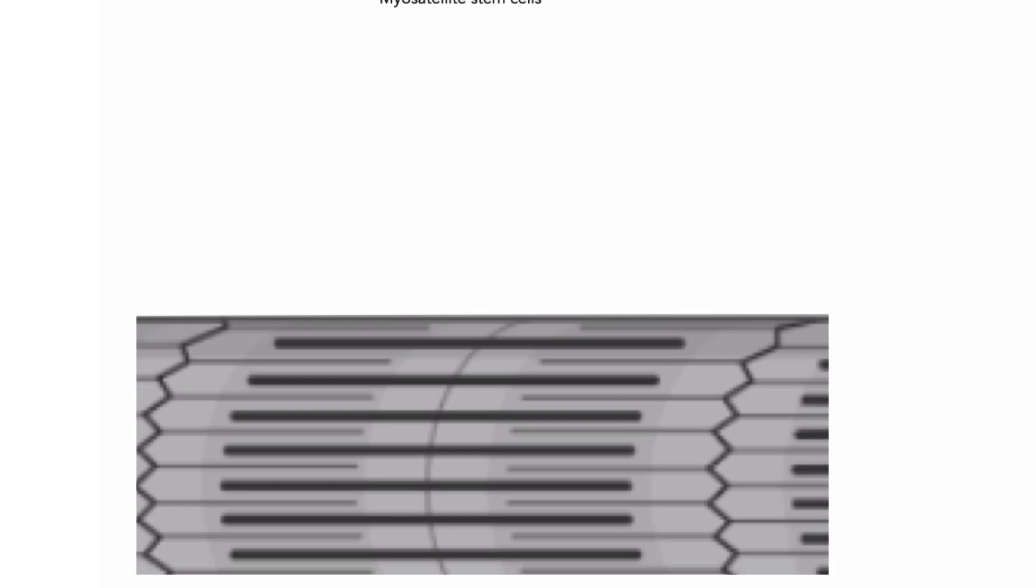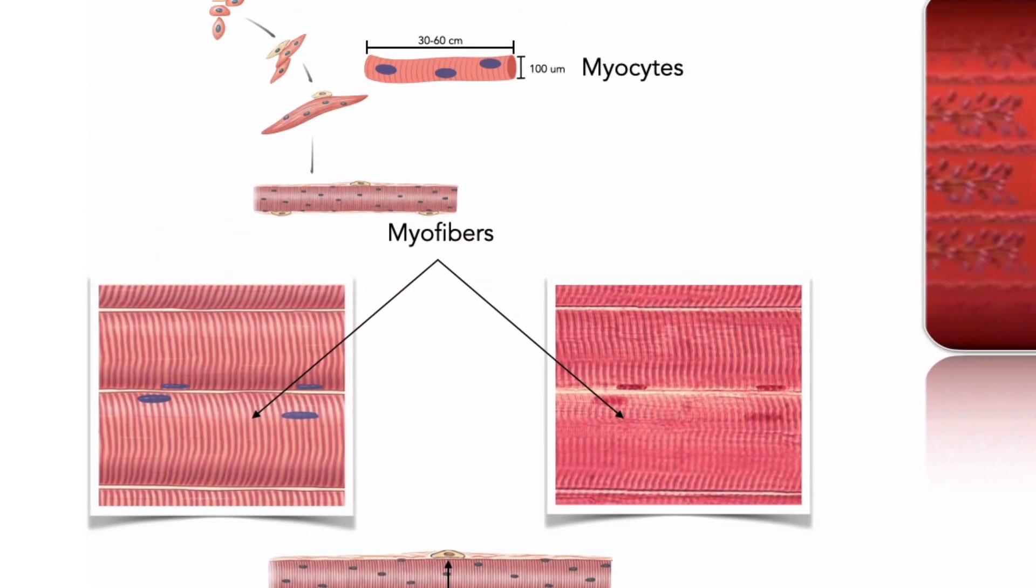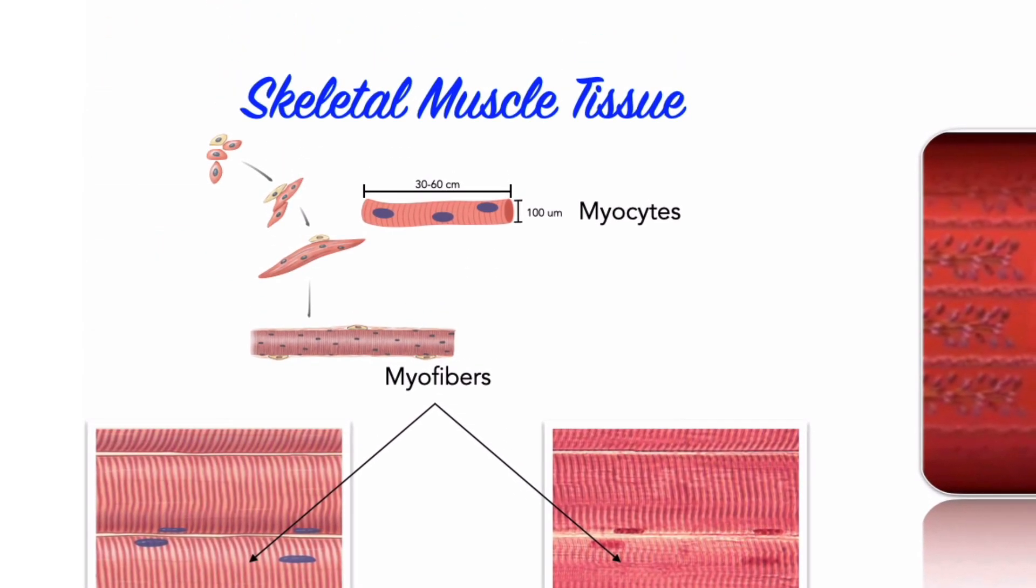Finally, skeletal muscle fibers will not usually contract unless stimulated by nerves. Because the nervous system allows us to consciously and voluntarily control skeletal muscle activity, skeletal muscle tissue is described as striated voluntary muscle.